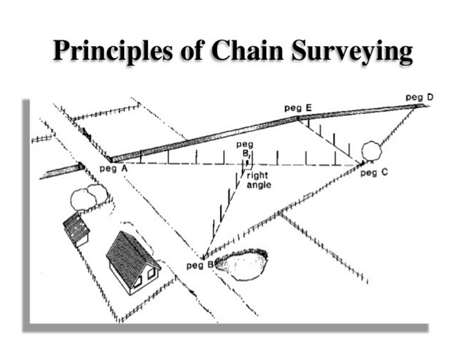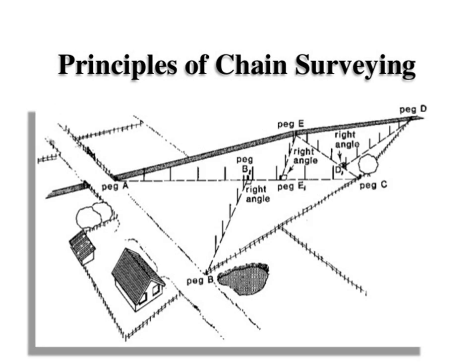It is possible to calculate the total area under the closed traverse A-B-C-D-E-A. From control station E and along line A-C, one right angle is established so that the area can be calculated more accurately. Similarly, considering control points E and C, a point D1 is established from station B making an angle of 90 degrees to line E-C, allowing further subdivision into triangles for more accurate area calculation.